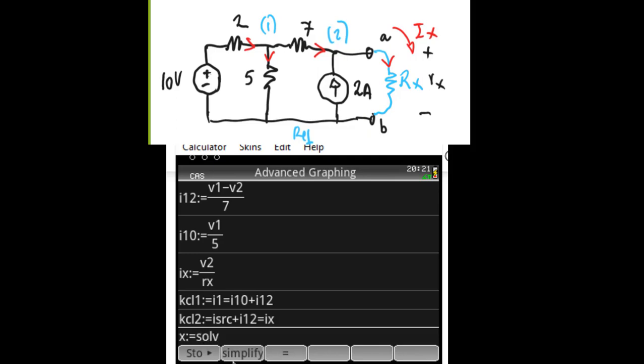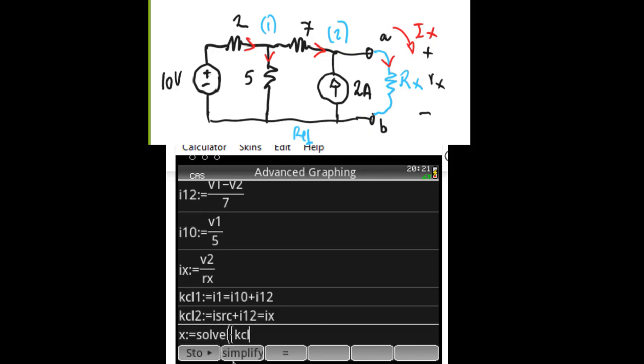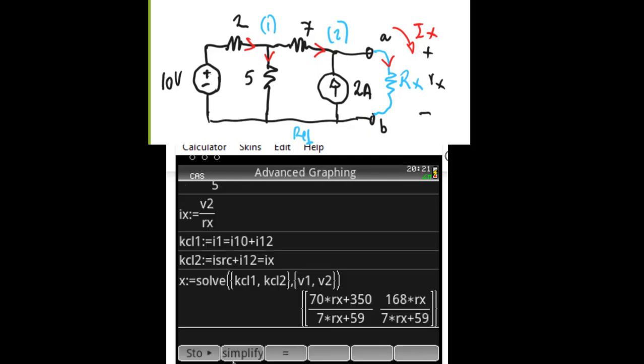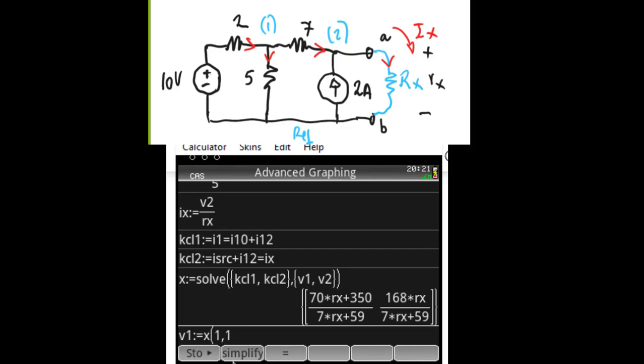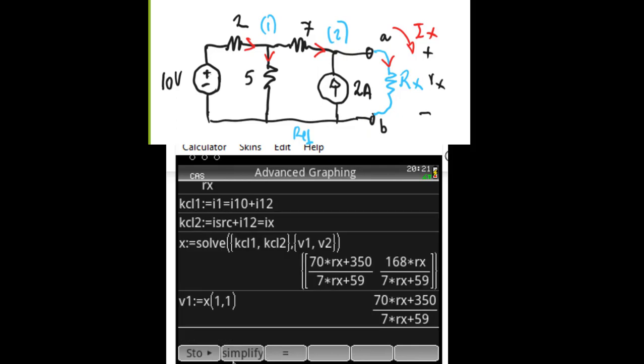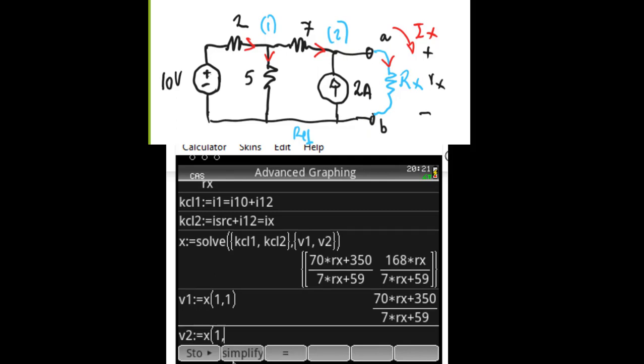So we solve the system of equations. KCL1, KCL2. And solve for V1 and V2. And they will come out as functions of Rx. No surprise there. We say V1 is just x1,1. There. That is V1. And V2, V2 is x1,2.